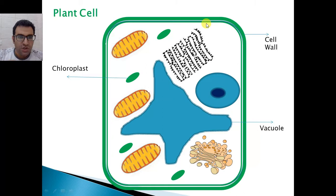Also, we have the chloroplast. The chloroplast is responsible for giving the green color of the plant and plays a role in photosynthesis, making the food of the plant.